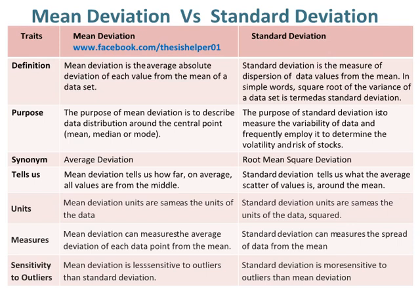The purpose of mean deviation is to describe data distribution around the central point — mean, median, or mode. Whereas, the purpose of standard deviation is to measure the variability of data and it is frequently employed to determine the volatility and risk of stocks. The synonym of mean deviation is average deviation.